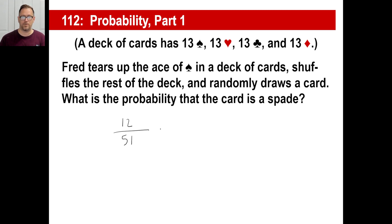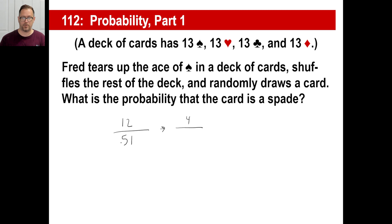A lot of times you can reduce these fractions, and it's possible the back of the book will show a different answer. Just reduce the fraction. What goes into both 12 and 51? Three. Because five plus one is six, which is divisible by three. Three into 51 is 17. So the reduced answer is 4 over 17 — just a little less than one out of four chances.